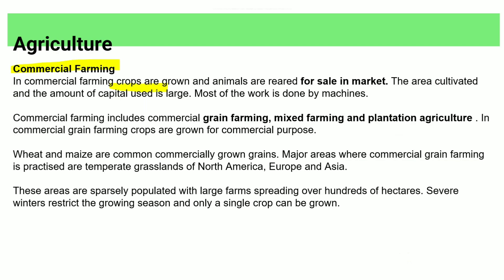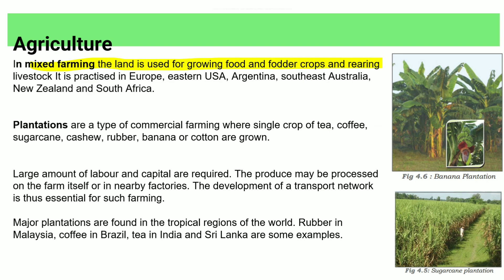Commercial farming involves growing animals and crops for sale in the market. It is market-focused and done on a large scale. Most of the work is done by machines. It includes commercial grain farming, mixed farming, and plantation agriculture. Wheat and maize are commonly grown as commercial grain crops. Plantation agriculture involves planting a single crop such as tea or coffee on large estates.